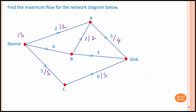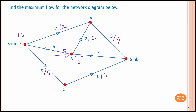Now for vertex B: we have 3 units flowing to the sink and 2 units flowing to A — so 5 units flow out of B. We have 6 units flowing into B but only 5 flowing out, so the maximum flowing into B is 5 units. This 3 goes to the sink and 2 goes to A, making 5 altogether.